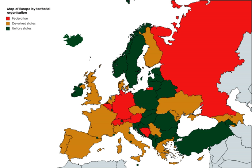The Union List includes subjects of national importance such as defence of the country, foreign affairs, banking, communications and currency. The Union Government alone can make laws relating to the subjects mentioned in the Union List. The State List contains subjects of state and local importance such as police, trade, commerce, agriculture and irrigation. The state governments alone can make laws relating to the subjects mentioned in the State List. The Concurrent List includes subjects of common interest to both the Union Government as well as the state governments, such as education, forest, trade unions, marriage, adoption and succession. Both the Union as well as the state governments can make laws on the subjects mentioned in this list. If their laws conflict with each other, the law made by the Union Government will prevail.